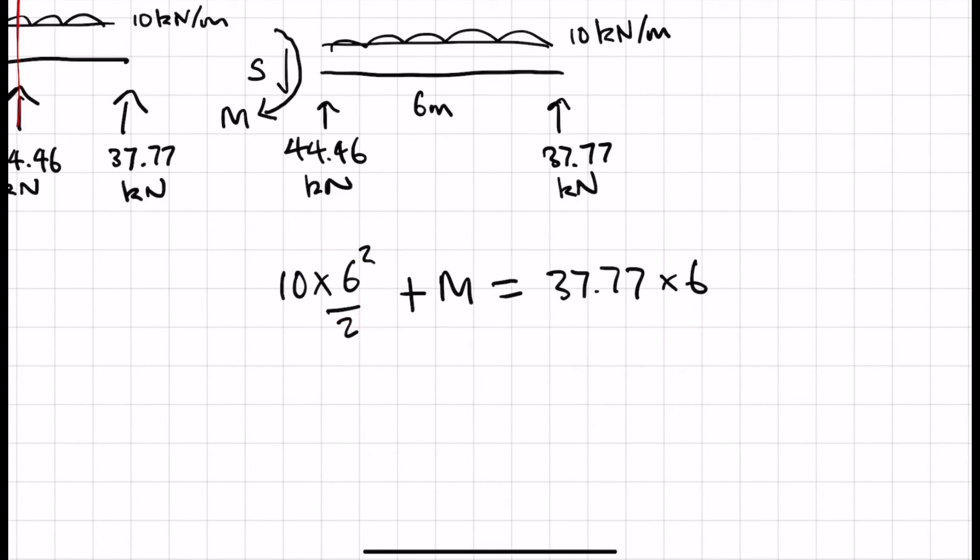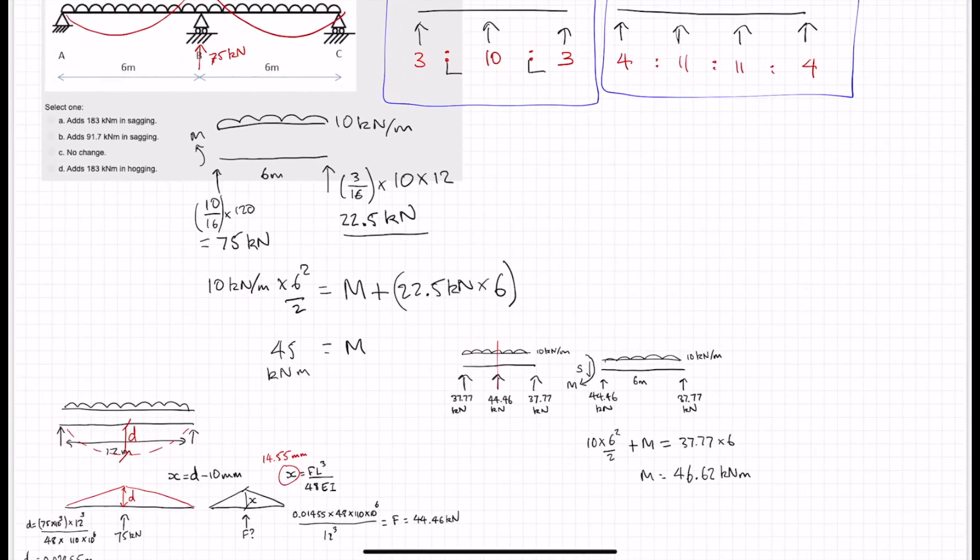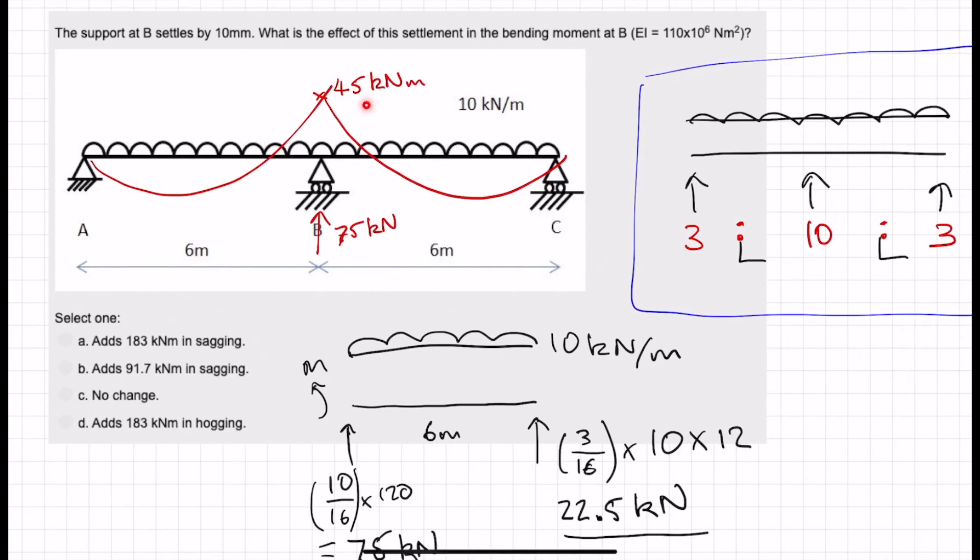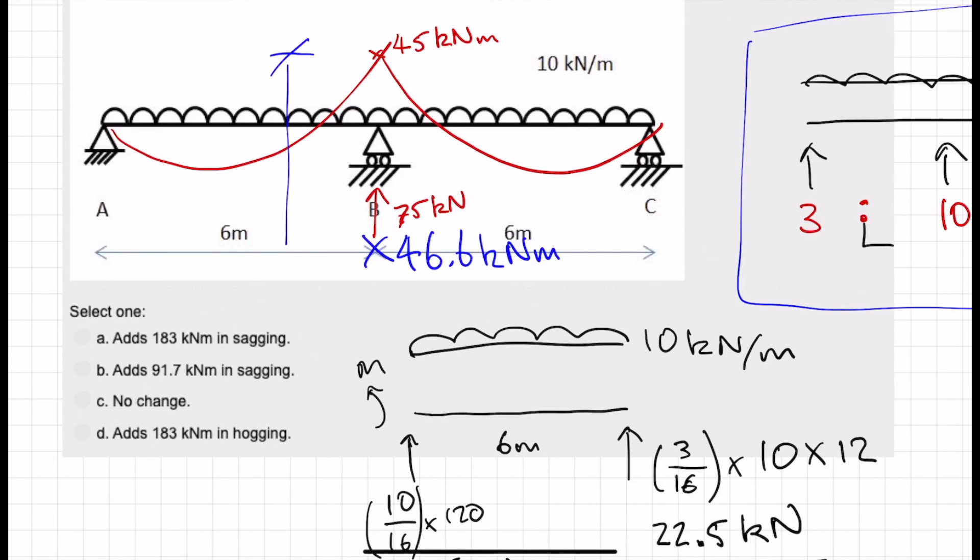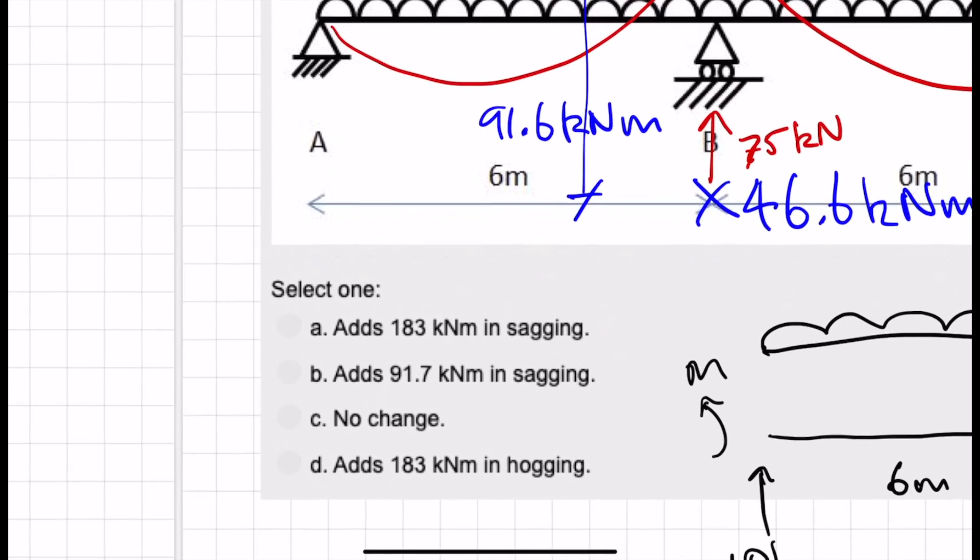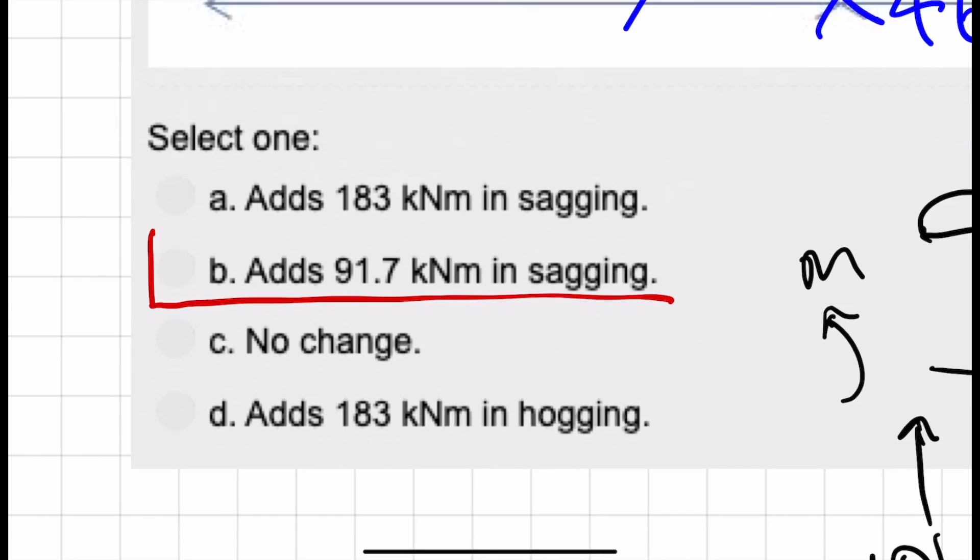Okay, so let's take a moment around this point then. So let's do the clockwise moments, which is 10 kilonewtons per meter times 6 squared over 2, plus M, because that's also clockwise, is equal to 37.77 times 6 meters. So M is equal to 46.6 kilonewton meters. Okay, so the difference was we started off at 45 kilonewton meters hogging. We've ended up with 46.6 kilonewton meters sagging. So the difference between that was 91.6 kilonewton meters. So of the possible answers, we've got 91.6, but it says 91.7, so that's close enough. It adds 91.7 kilonewton meters in sagging. And that is our final answer.